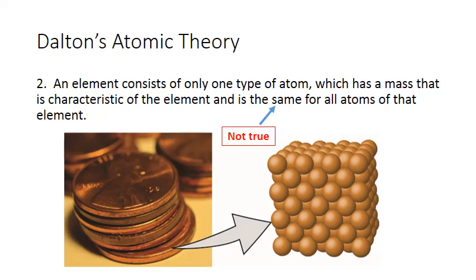We actually now know that this is not completely true as Dalton stated it. It turns out that there can be small variations in mass between those atoms of copper. These are called isotopes. However, all the other properties of those atoms of copper are still identical and the average atomic mass of those isotopes is characteristic of the element still.